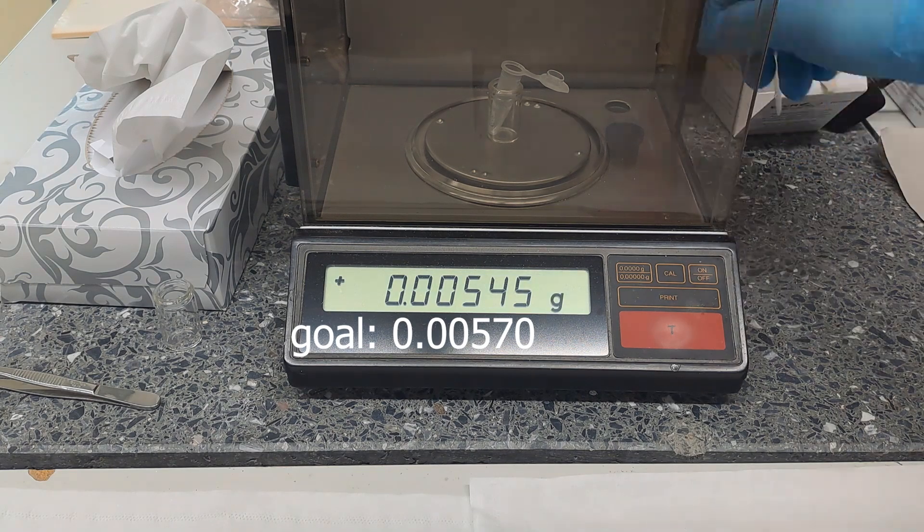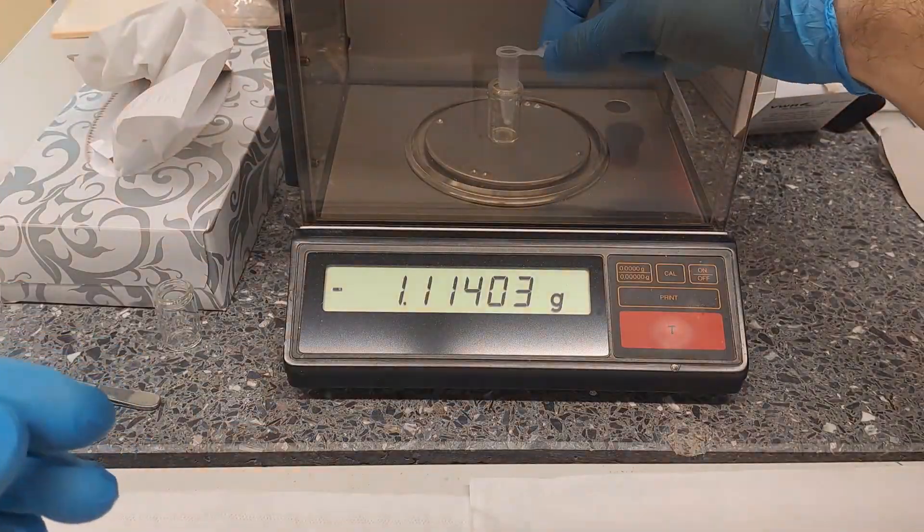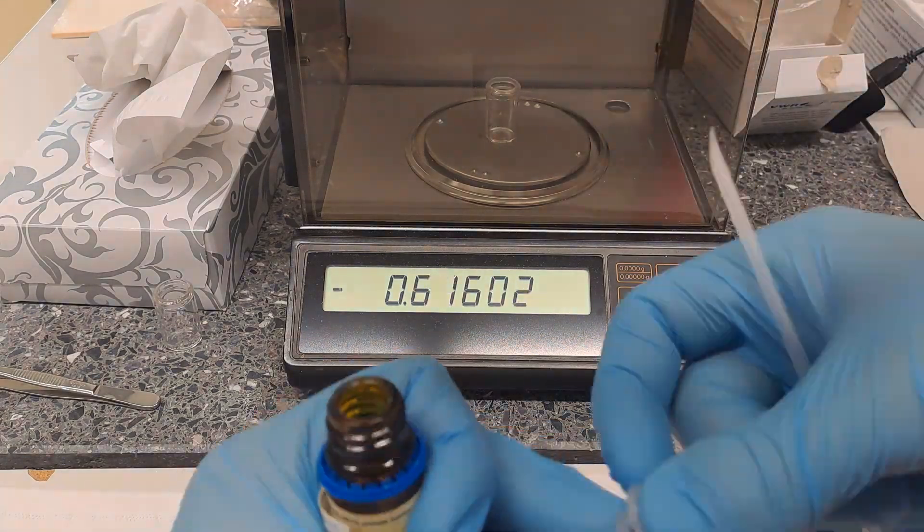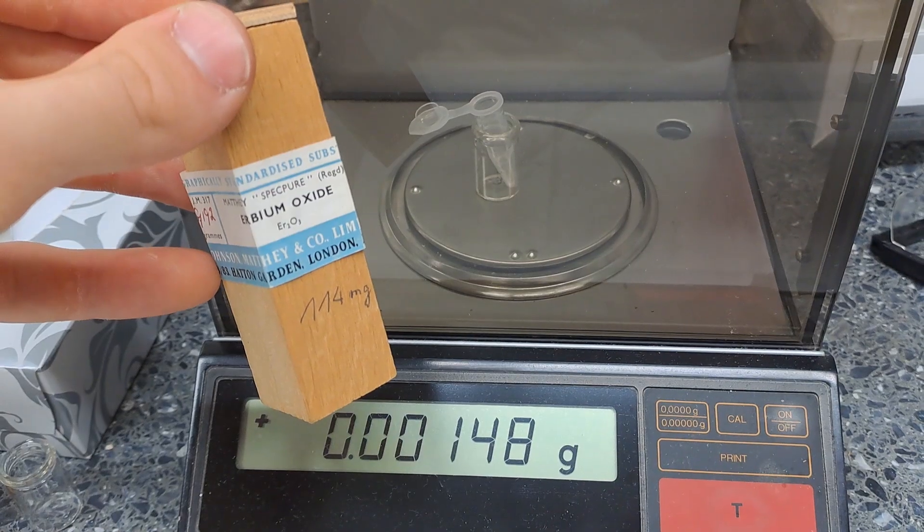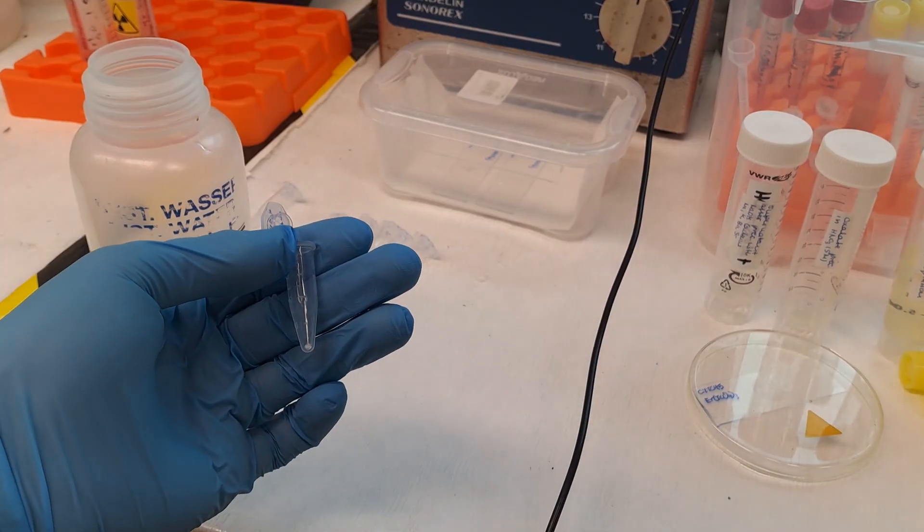I will do this seven times because I want to have a supply of perrhenic acid for the future, from which other perrhenates can be made. But I wanted to show what pain it is to weigh out 5D salts.